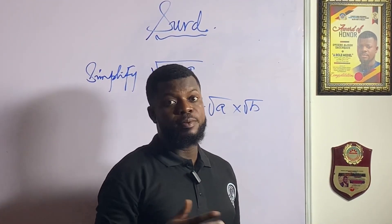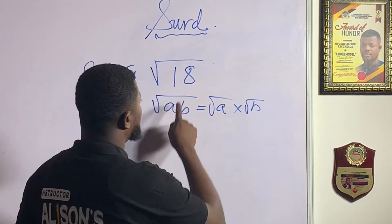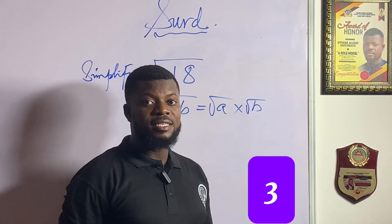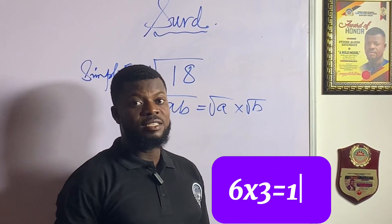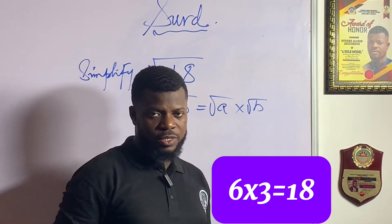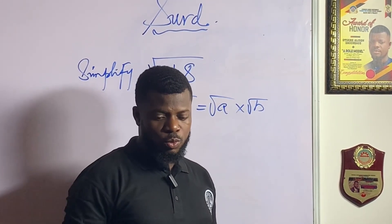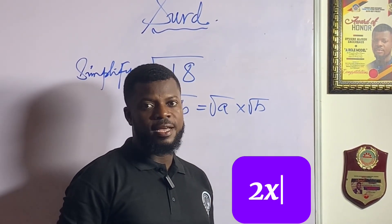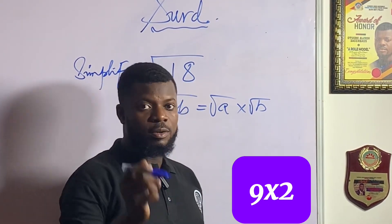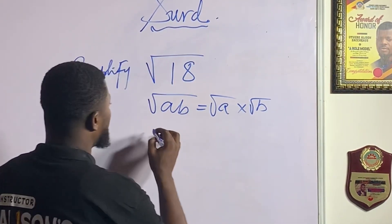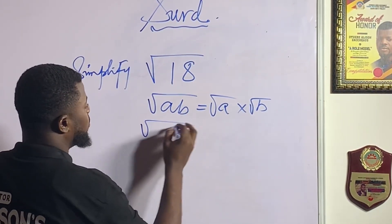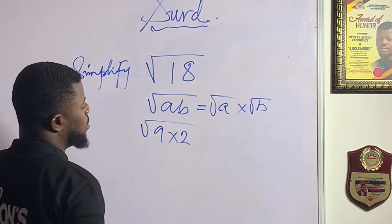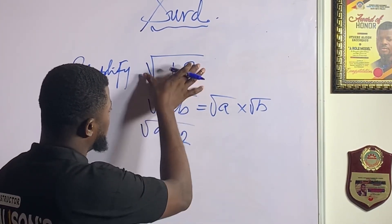So think of any of these perfect square numbers to multiply with another number that may not be a perfect square to produce 18. If I think of 6 and 3 — 6 times 3 is 18 — but none of them are perfect squares. So what do we need to do? Think of 2 times 9, or 9 times 2. That's the solution.